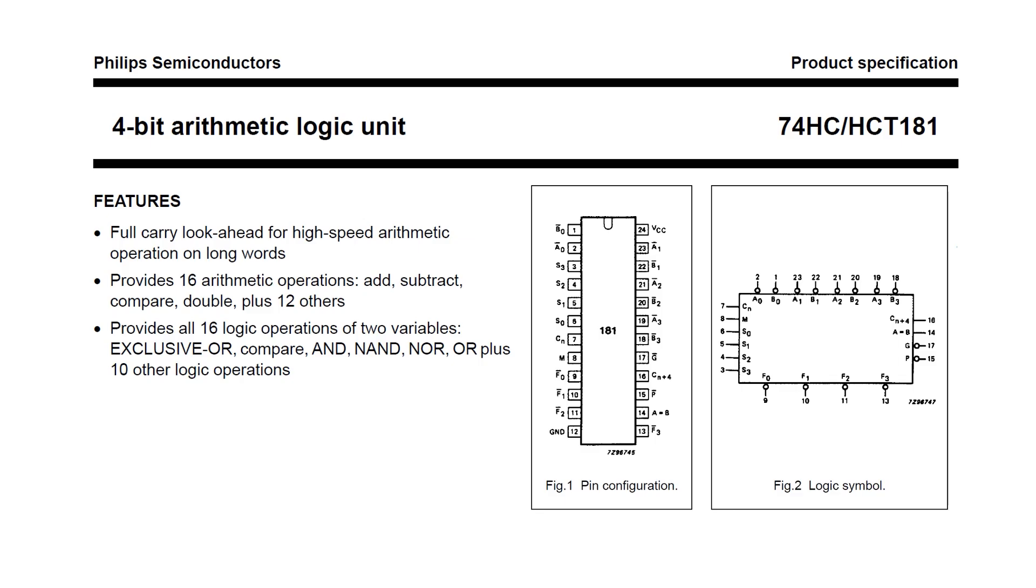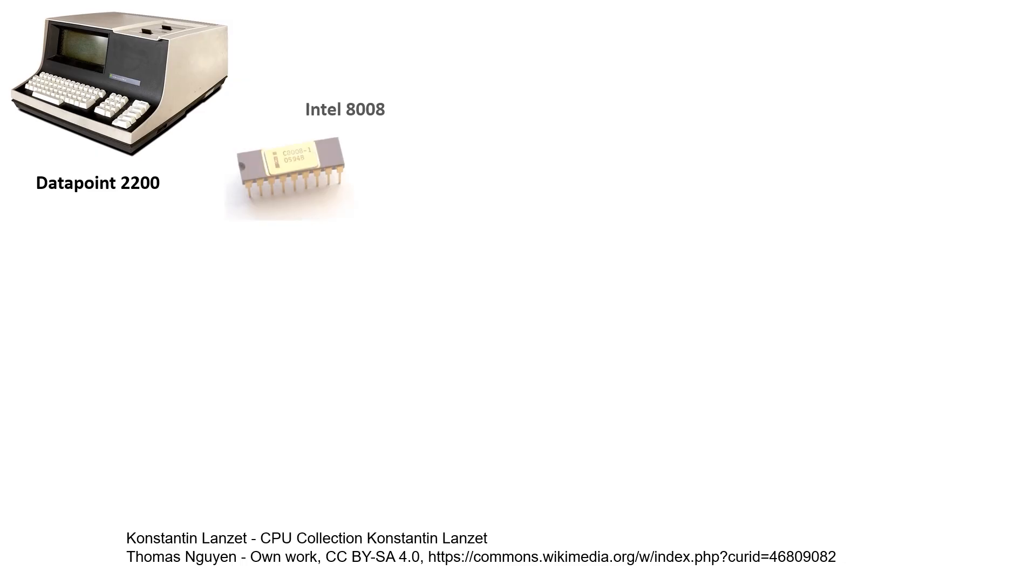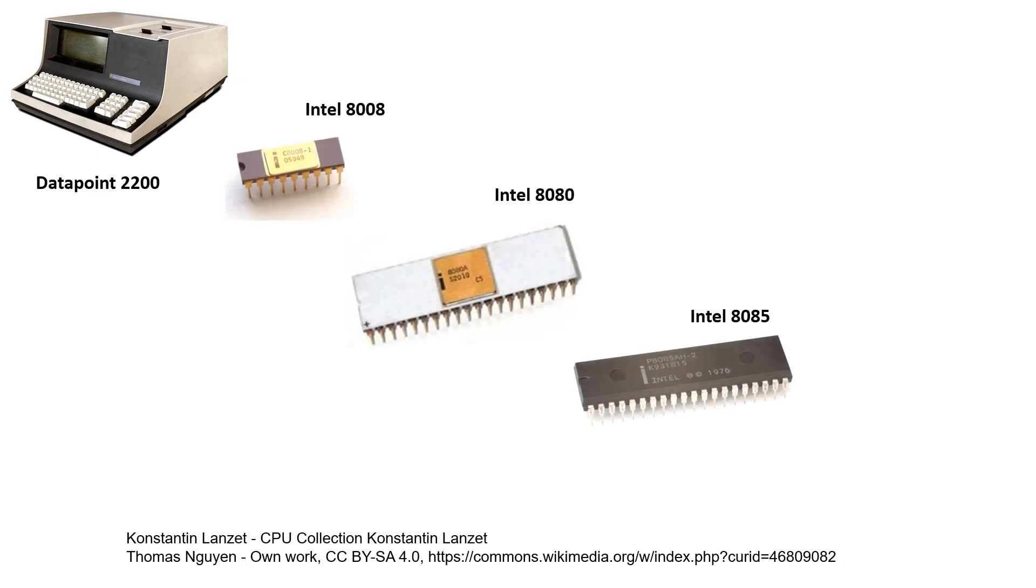In some ways, this isn't actually a surprise, given that the 74HC181 was the basis of the data point 2200. This was a TTL-based CPU, which led to the Intel 8008, then 8080, and Zilog Z80, which was the main competitor to the 6502. It could be argued that this 7400 series chip really is the basis of the ALU in modern computers.